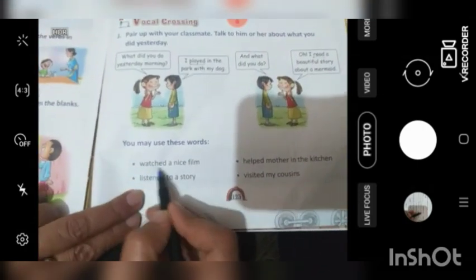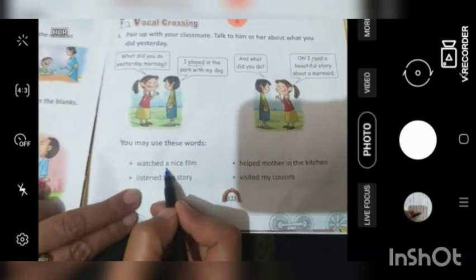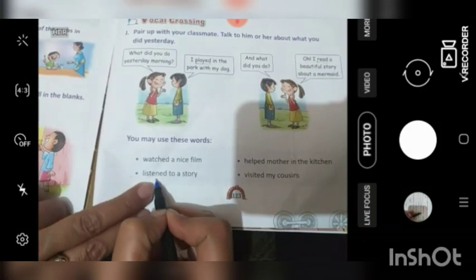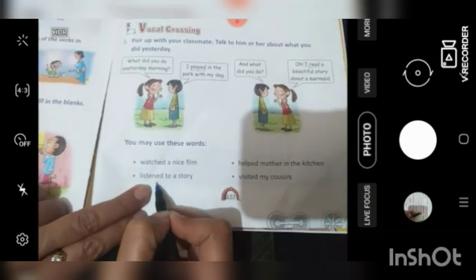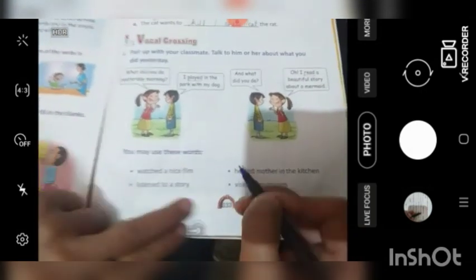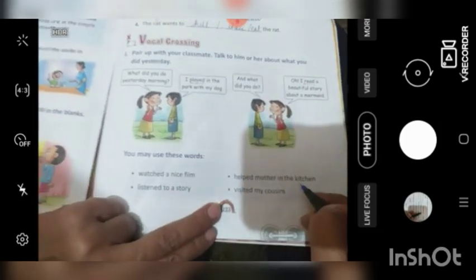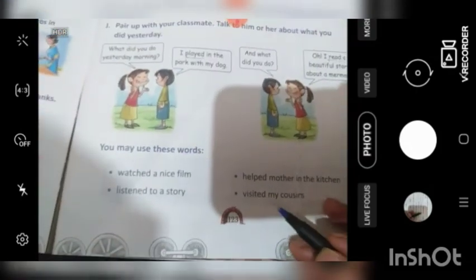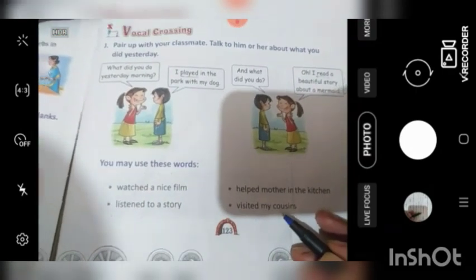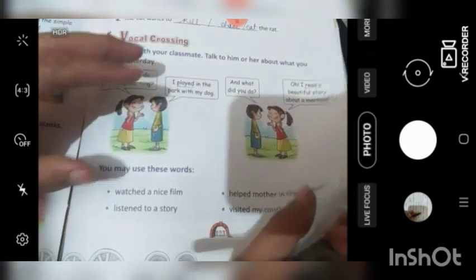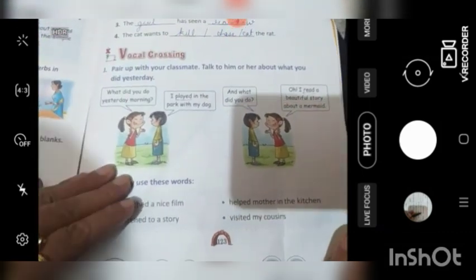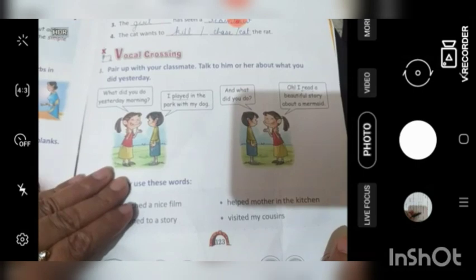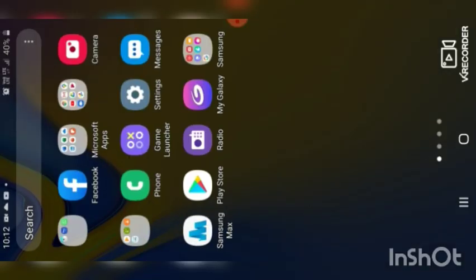You may use these words. Watched a nice film. Achhi film dekhi thi. Listen to a story. Meinne kal story suni thi. Helped mother in the kitchen. Mamma ki kitchen mein madad ki thi. Visited my cousins. Aapne cousins ke paas gaya tha. So, remember when we talk about the actions that have already taken place, we put ED after action words.